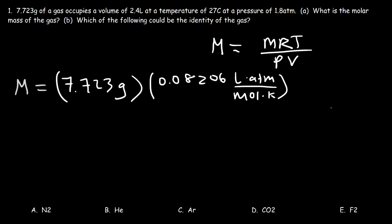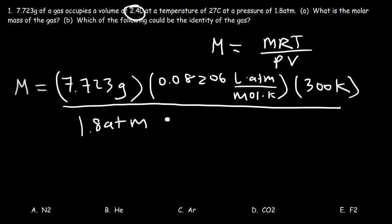So 27 plus 273 is 300 Kelvin. And then we're going to divide it by the pressure, which is 1.8 atm multiplied by the volume, which is 2.4 liters. So notice that the unit liters cancel, the unit atm cancels, and also the Kelvin unit cancels, leaving behind grams per mole, which is the unit for molar mass.